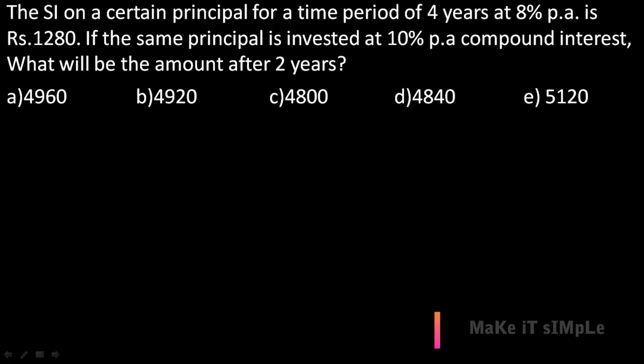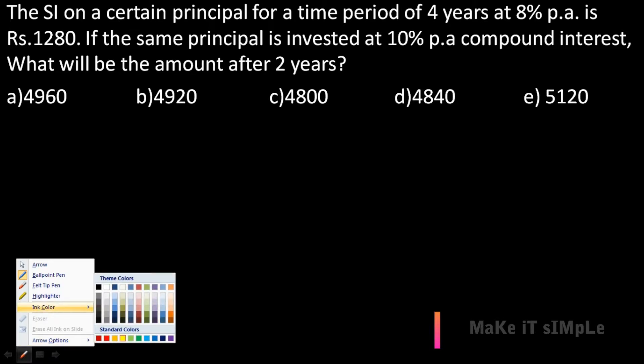Next question: simple interest on a certain principal for a time period of four years at 8% per annum is 1280. If the same principal is invested at 10% per annum compound interest, what will be the amount after two years?